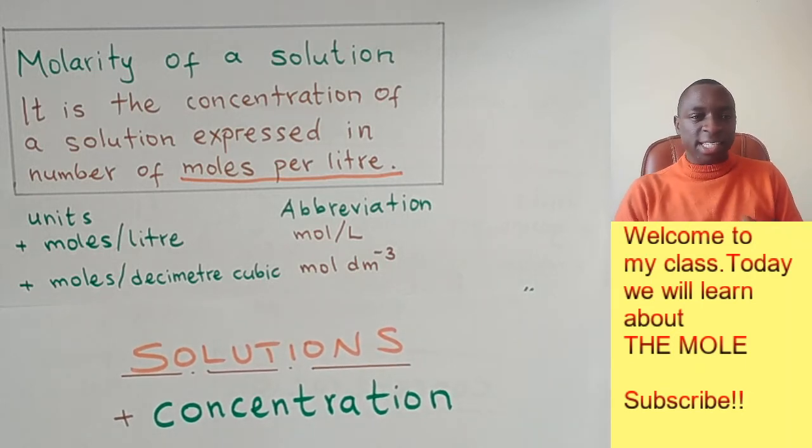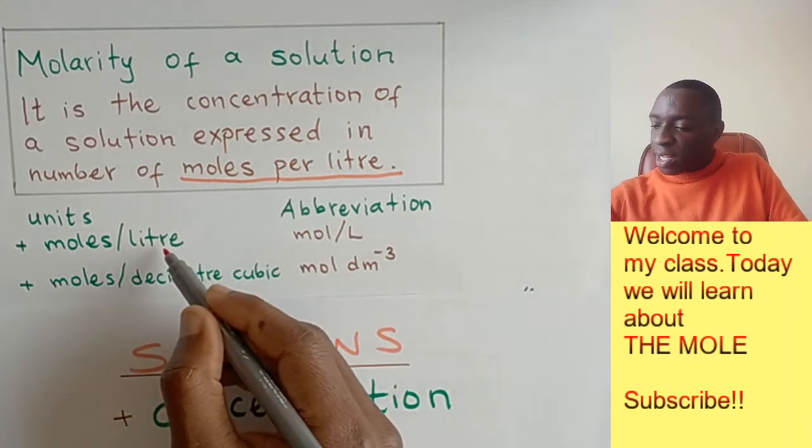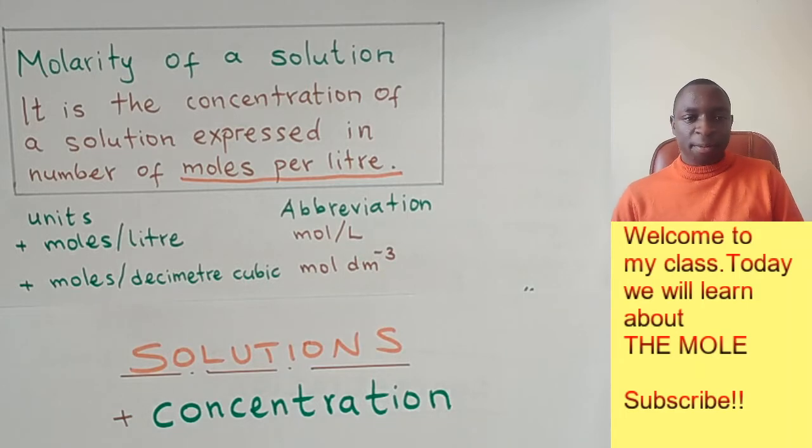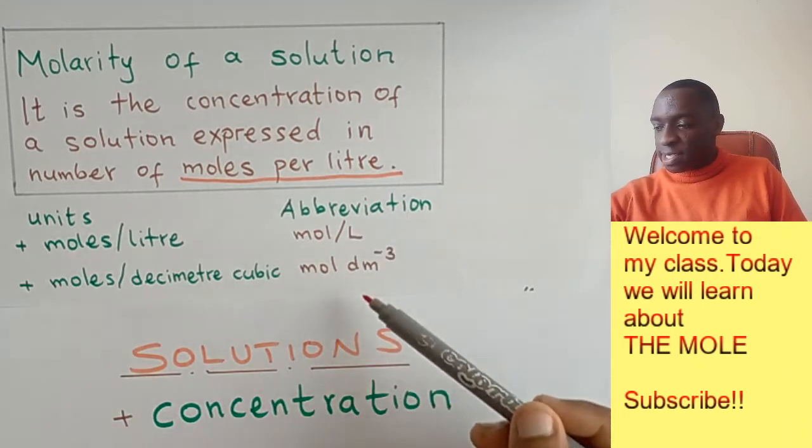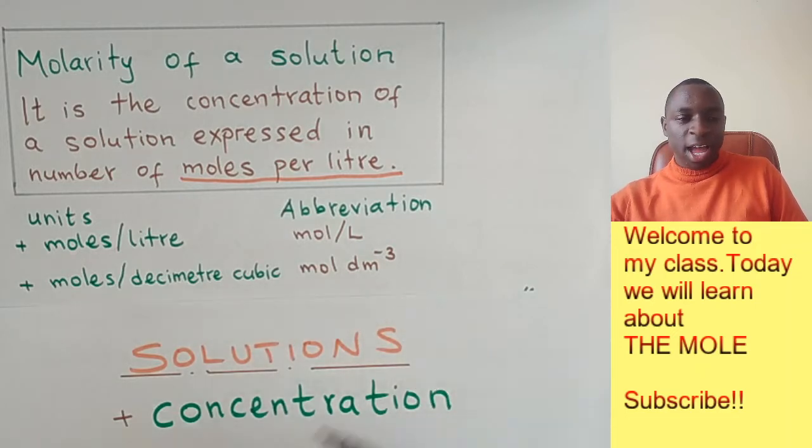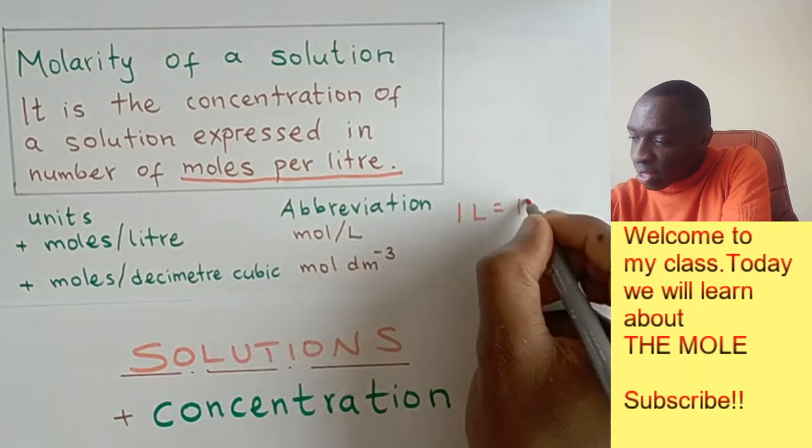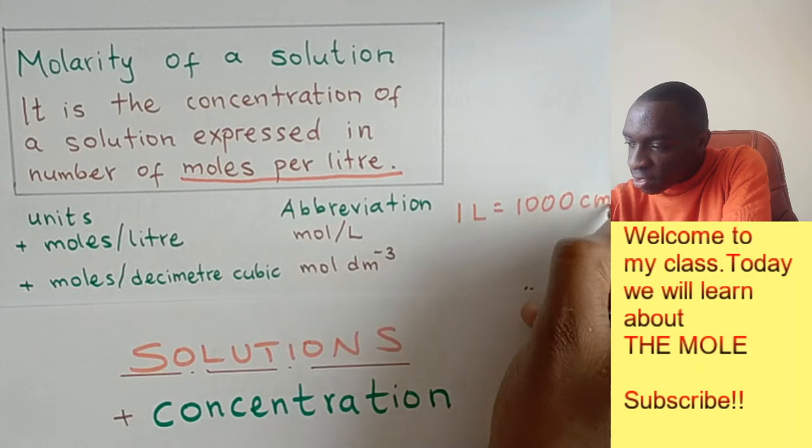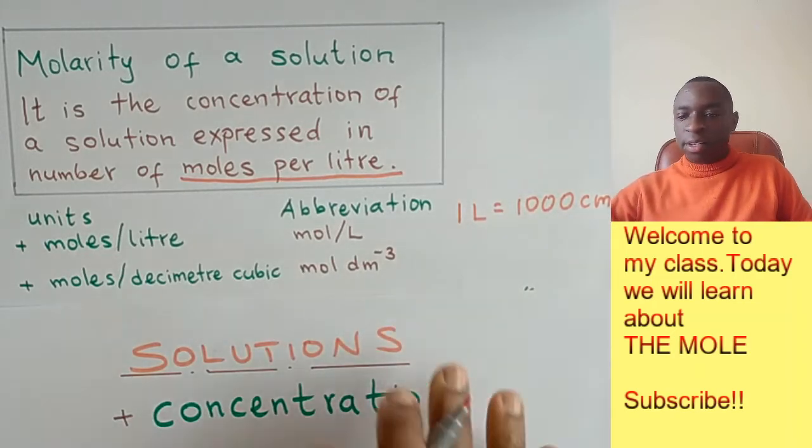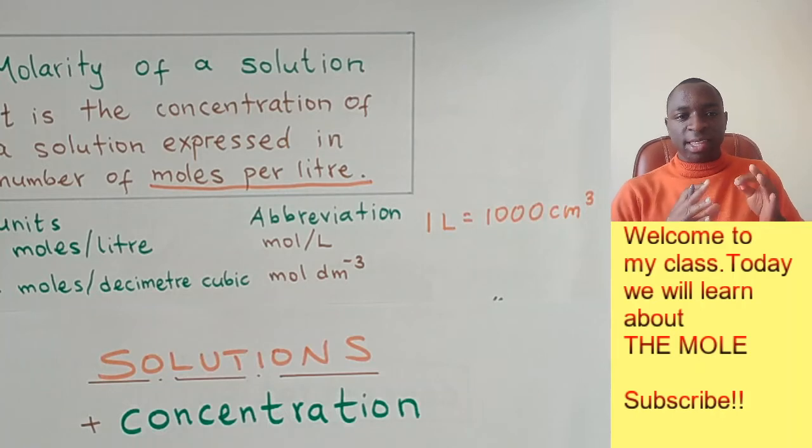However, in this case, it must be moles per liter. Now, one liter and one decimeter cubed is the same thing. That is why we can express it in terms of moles per liter like this or moles per decimeter cubed like this. And you should always remember that one liter is equal to a thousand centimeters cubed. One liter is a thousand centimeters cubed. That's a very important thing to remember.